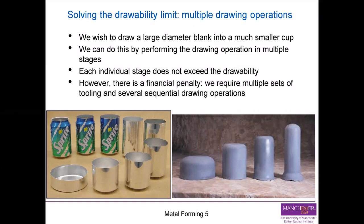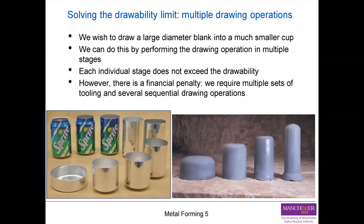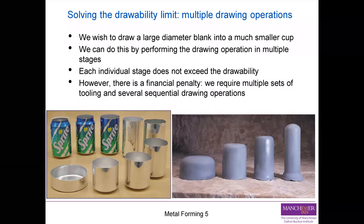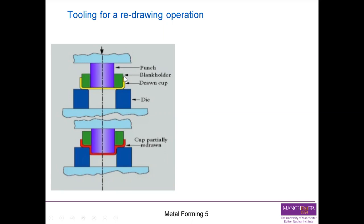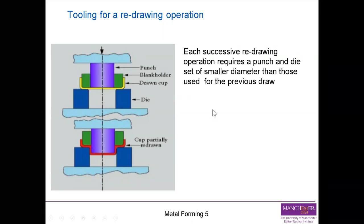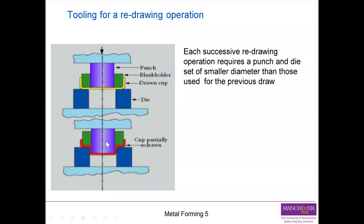Deep drawing has a tremendous cost and is a manufacturing process dedicated to large volume production, because it entails tremendous capital cost. But once set up, it can produce multiple components at a time. This slide demonstrates the assembly that could be used for redrawing. We have the first drawing operation, and then each successive operation requires a new punch and a new die. The new die will have a smaller diameter than those used for the previous draw.